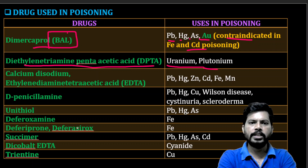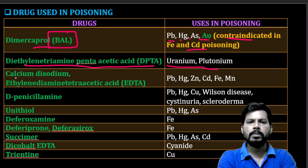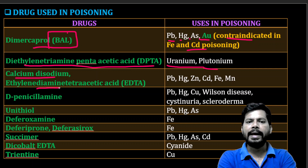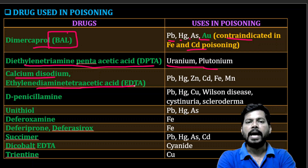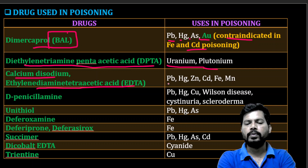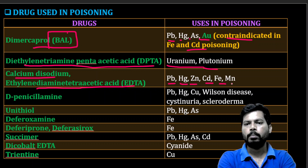Calcium disodium EDTA (ethylenediamine tetraacetic acid) is used as an antidote for poisoning by lead, mercury, zinc, cadmium, and iron.